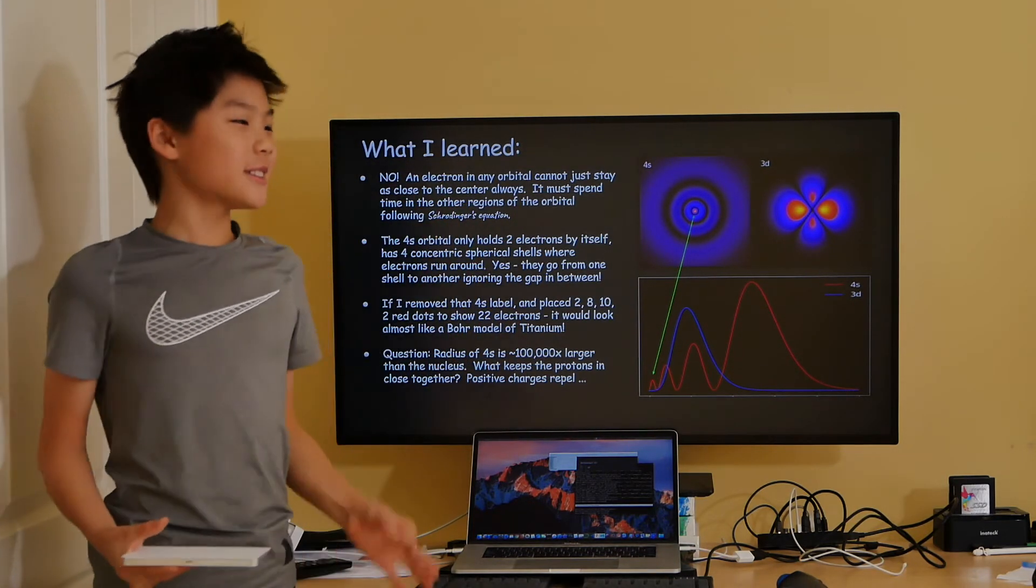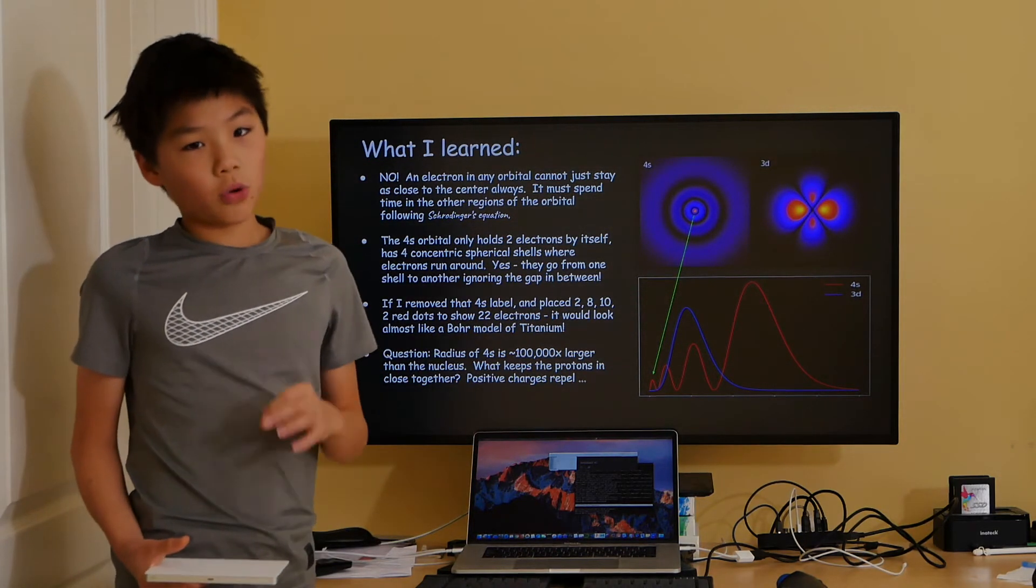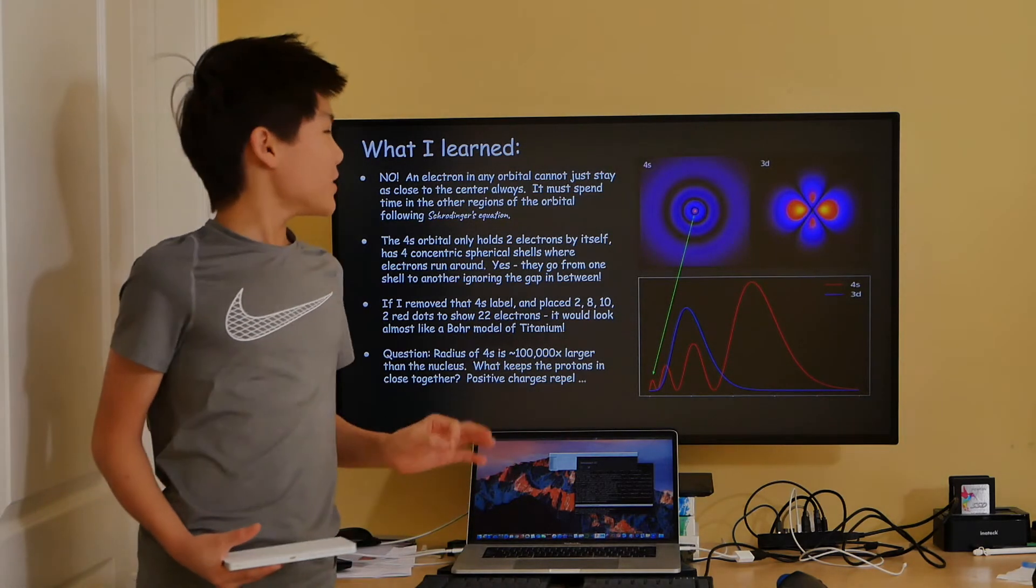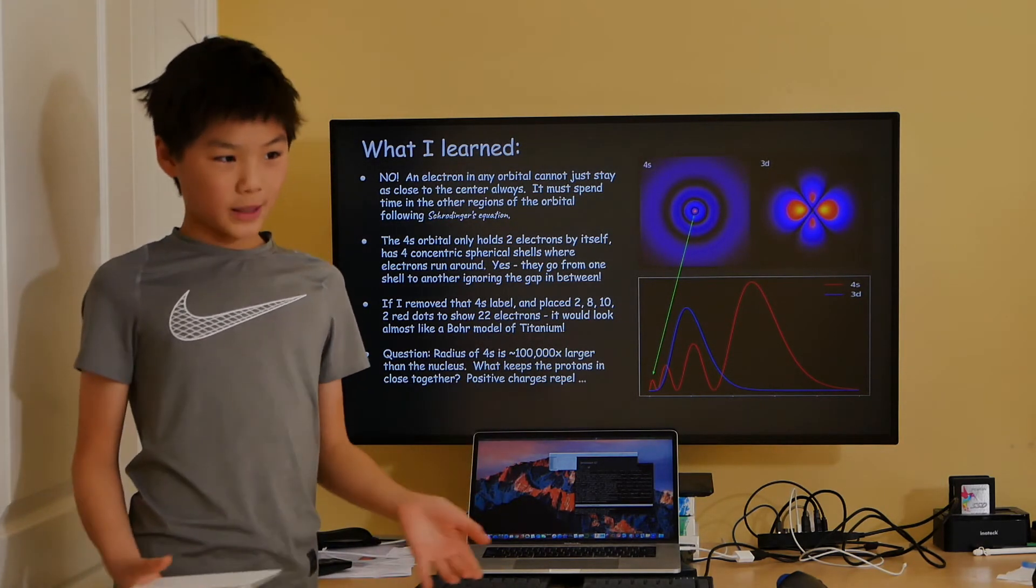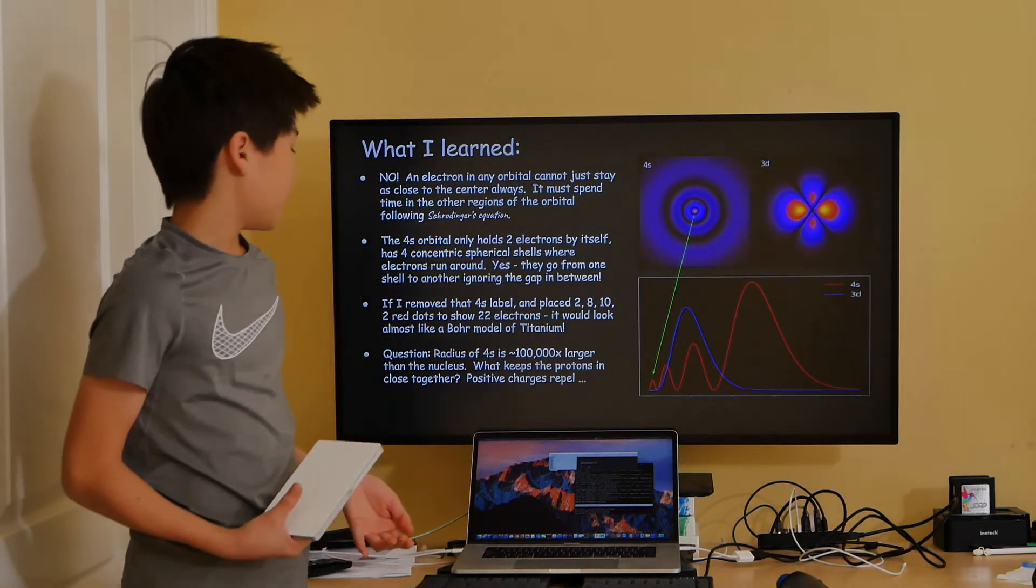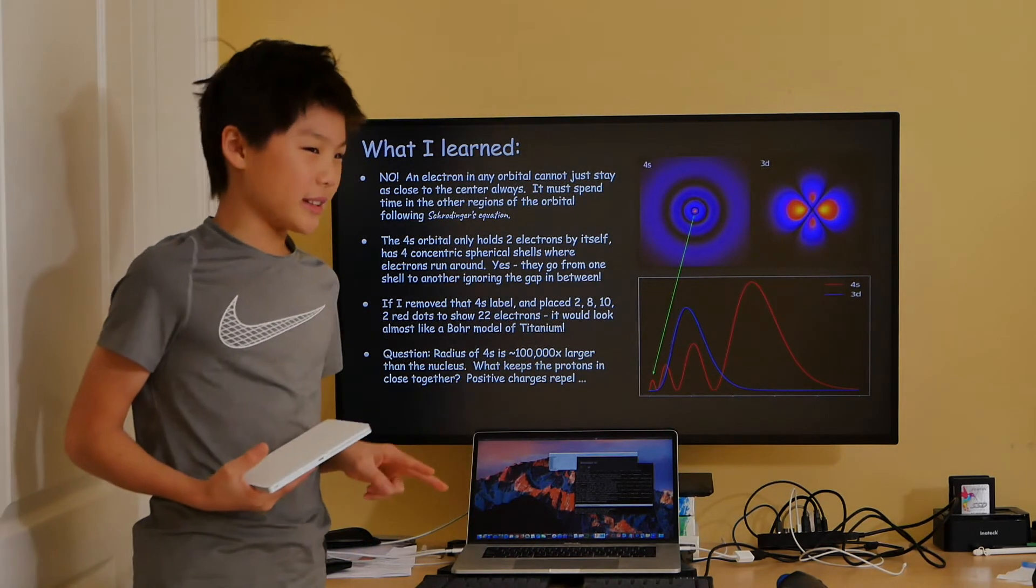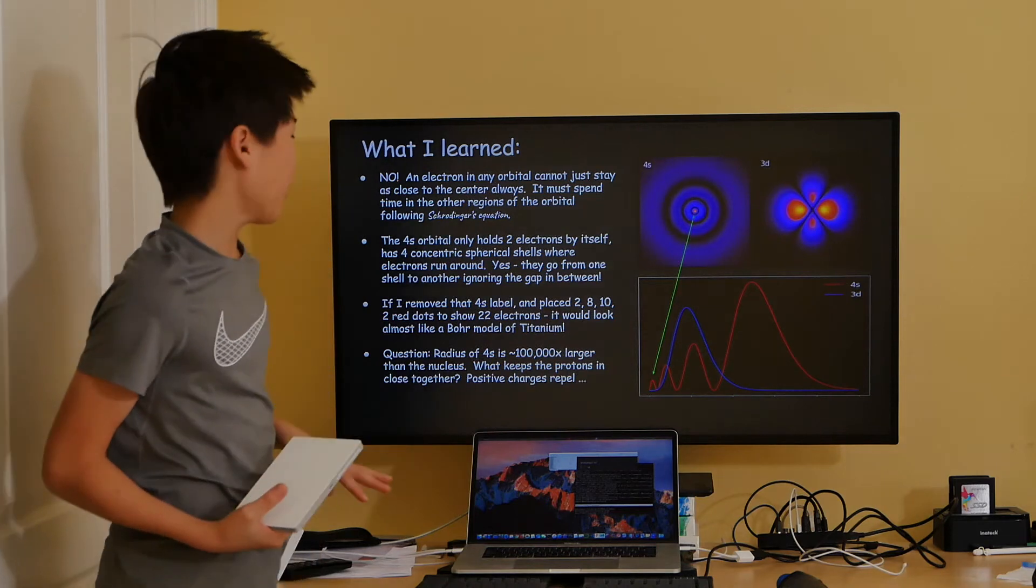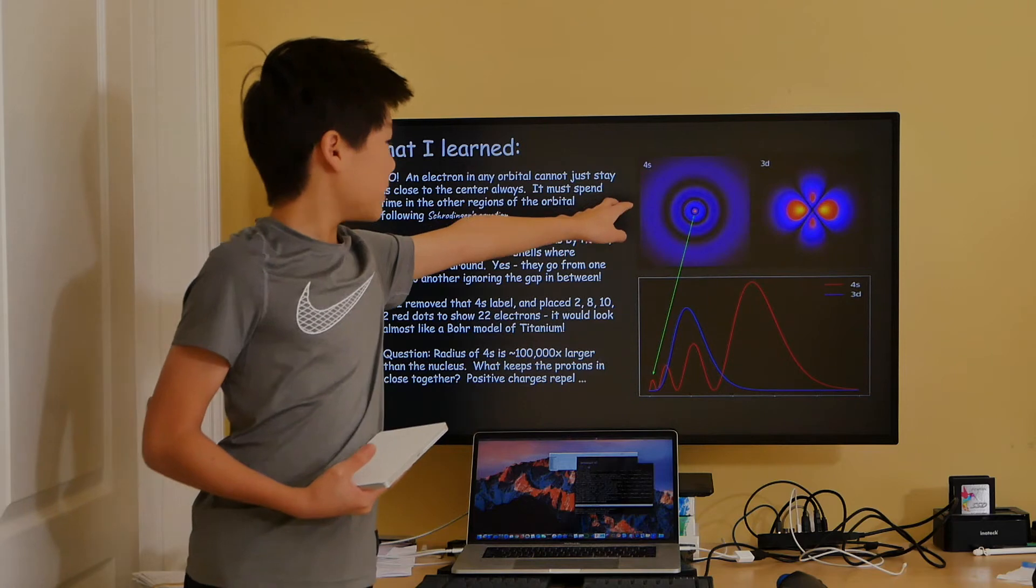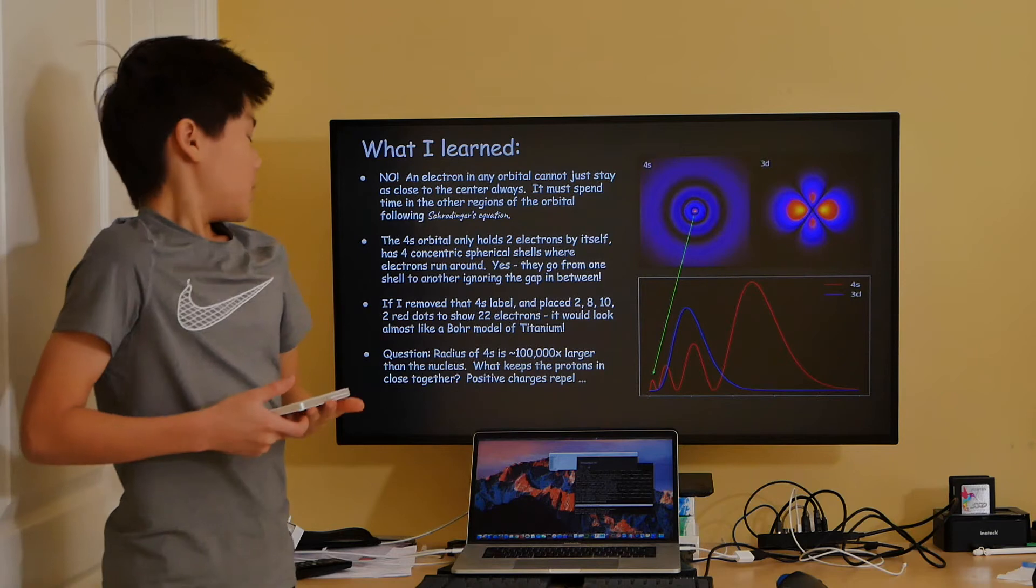Yes, I know what you're thinking, but if you were assigned to a 4s orbital, or any electron in any orbital, you cannot just stay in the center always. You have to always be moving around continuously, following Schrödinger's equation. The 4s orbital can only hold 2 electrons even though it consists of 4 concentric spherical shells. And the electrons have no difficulty going from shell to shell.